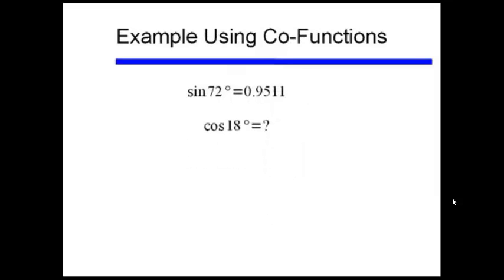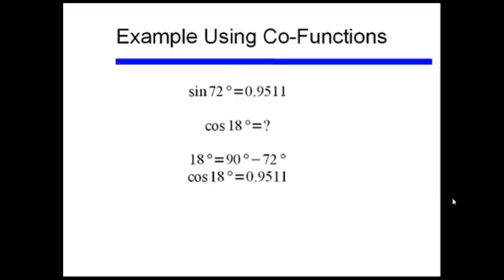Let's do an example. If sine of 72 degrees equals 0.9511, and you're asked without a calculator to find cosine of 18 degrees — if you recognize that 18 degrees is the complement of 72 degrees, that is 90 degrees minus 72 degrees equals 18 degrees, then cosine of 18 degrees equals the sine of 72 degrees, or 0.9511.